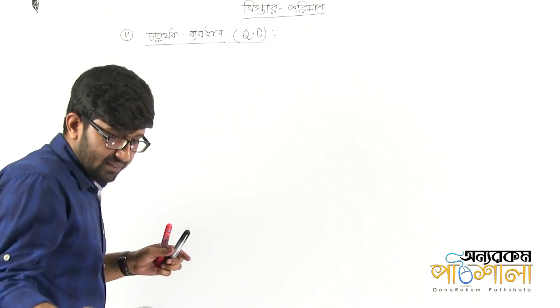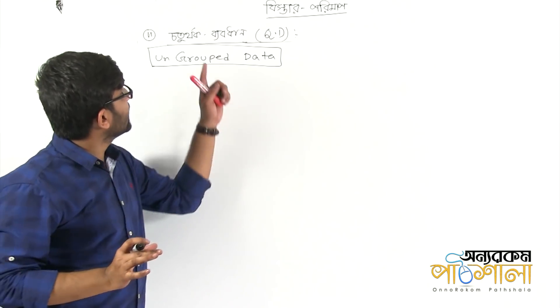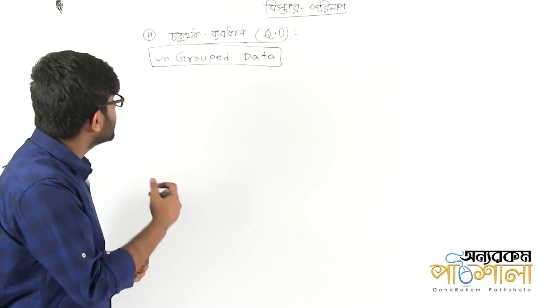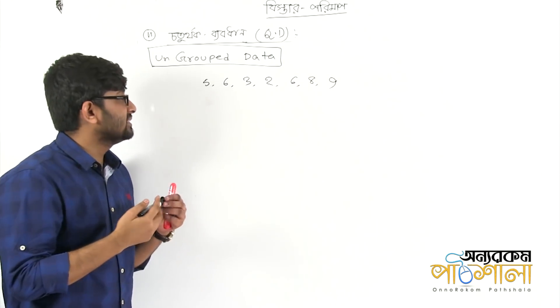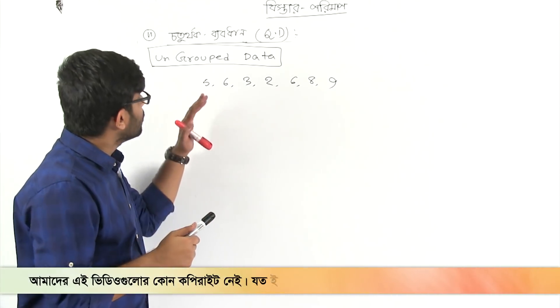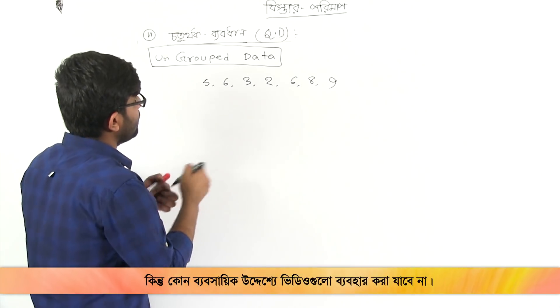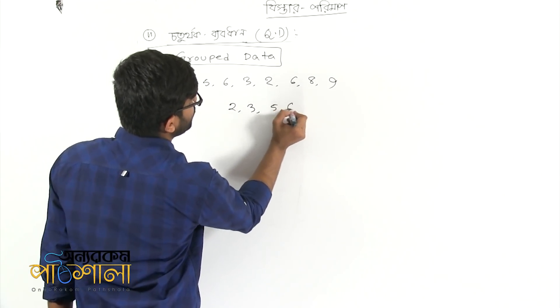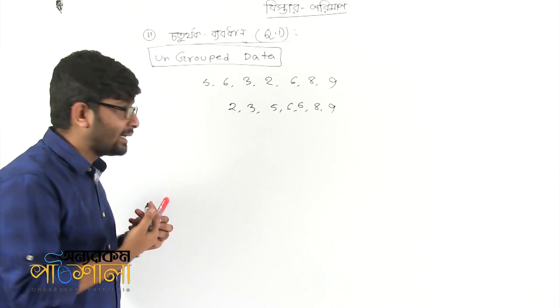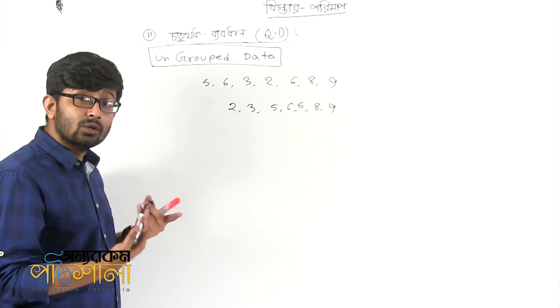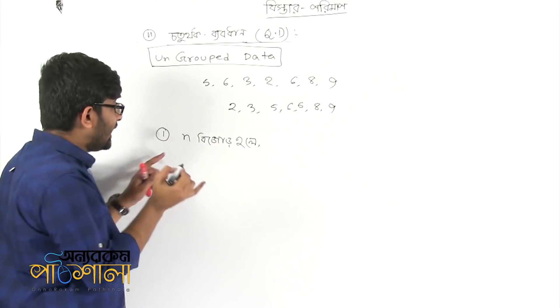We will see the quartile deviation. First, we will see the ungrouped data. We will see the quartile deviation for ungrouped data. Suppose we have student marks. We will see the marks. We will calculate the quartile deviation. We will see the marks: 2, 3, 5, and marks 8 and 9. We will see for ungrouped data. It is the same unit. And the marks, we will see the single numbers.